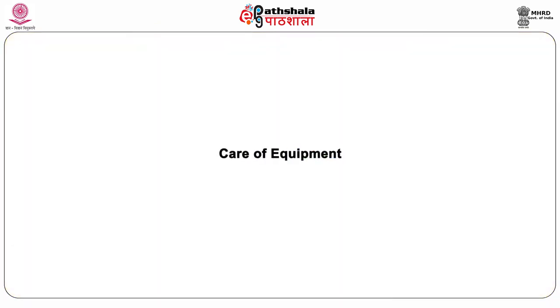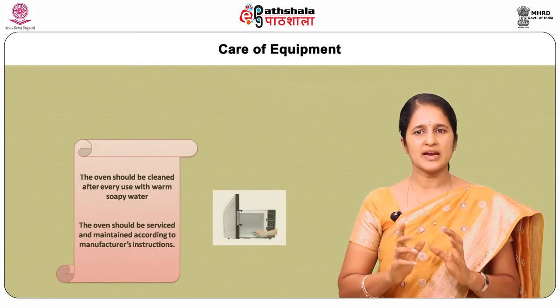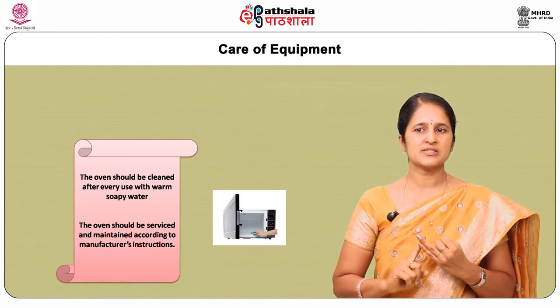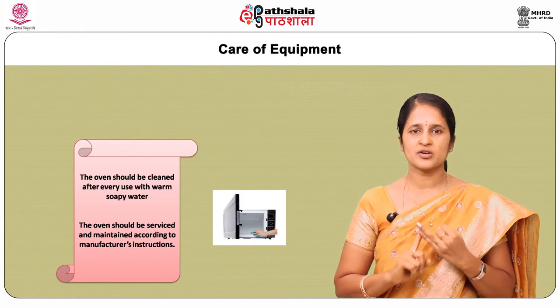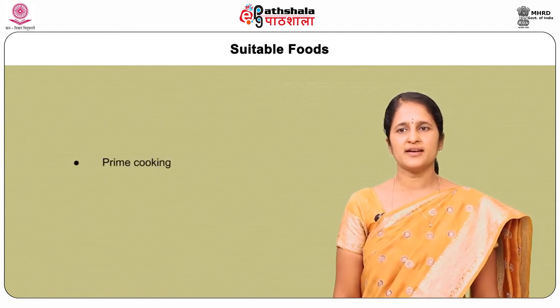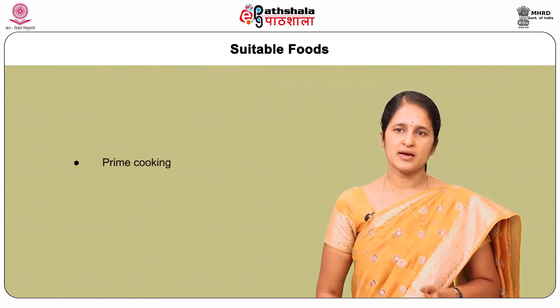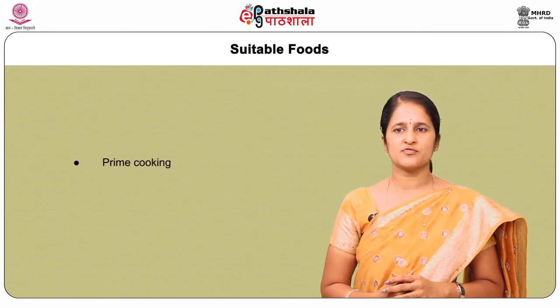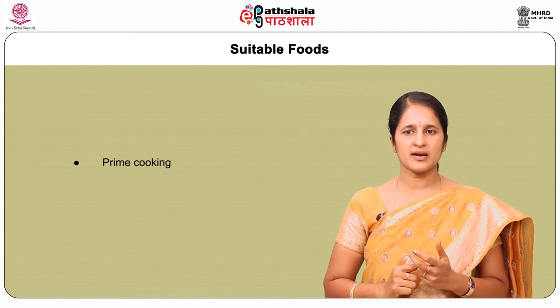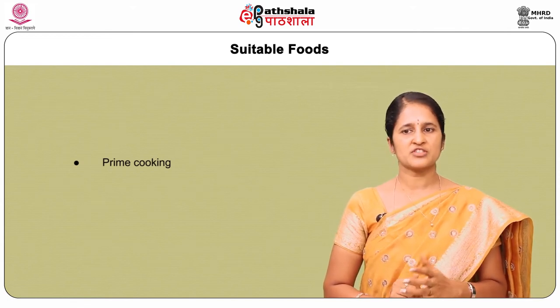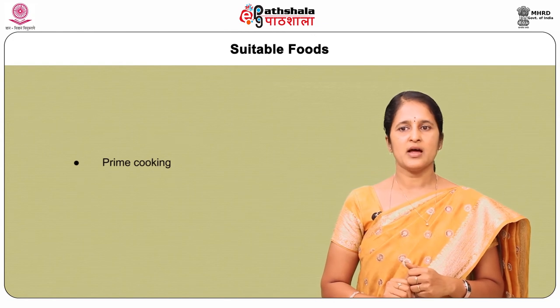Regarding care of equipment, the oven should be cleaned after every use with warm soapy water, and serviced and maintained according to the manufacturer's instructions. Most foods contain a large proportion of water and can therefore be cooked raw in a microwave oven. Baked flour products are not particularly successful because crispness, color and aeration are difficult to achieve. Cheaper cuts of meat do not have time to dissolve the collagen and tend to remain tough.